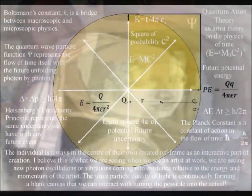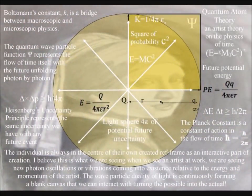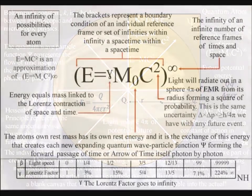Therefore quantum uncertainty, known as Heisenberg's uncertainty principle, is the same uncertainty we have with any future event, and is relative to the energy and momentum of our own actions. In this theory, creation is truly in the hand and eye of the beholder.